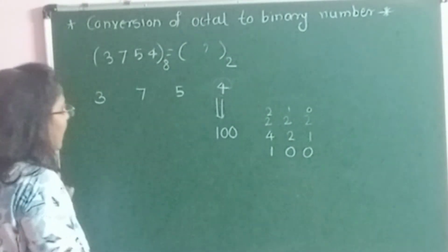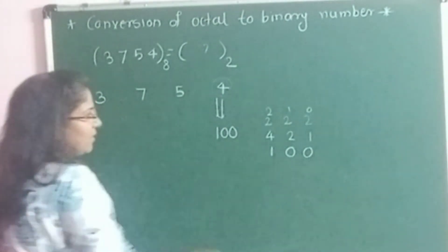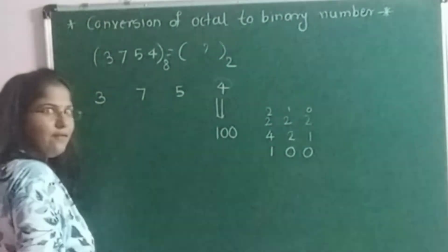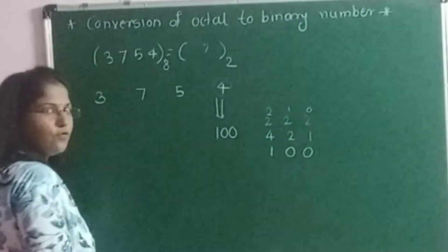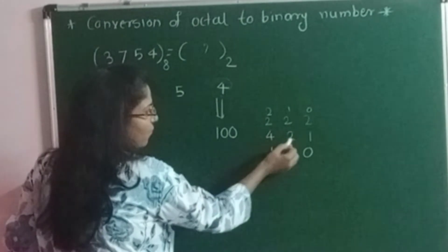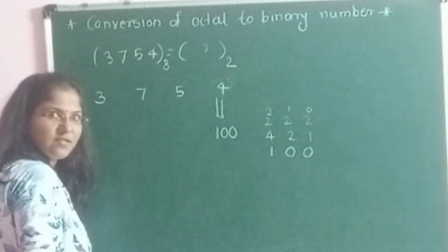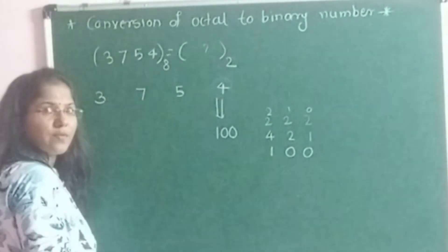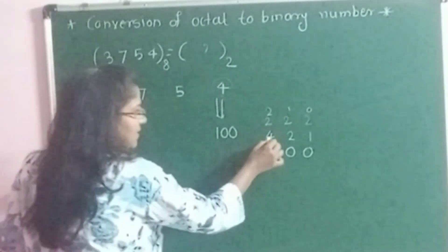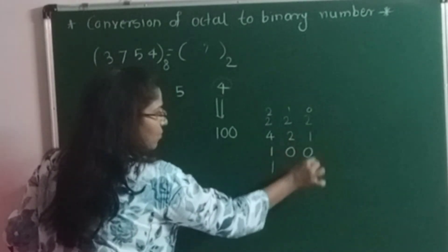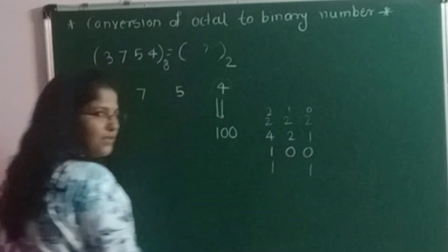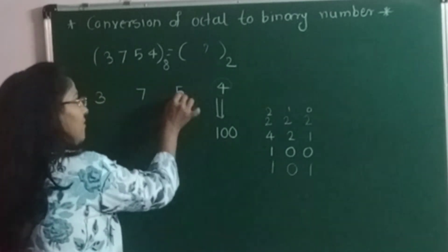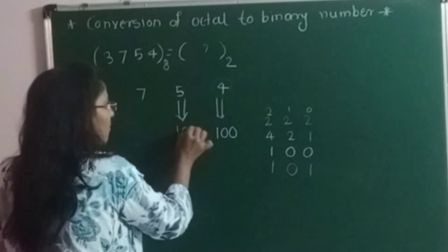The next digit is 5. We select the weighted values that add up to 5. If we add 4 and 2 we get 6, but we want 5. If we add 4 and 1 we get 5. So we select 4 and 1, and do not select 2, writing 0 below it. The 3-bit equivalent binary for 5 is 1, 0, 1.